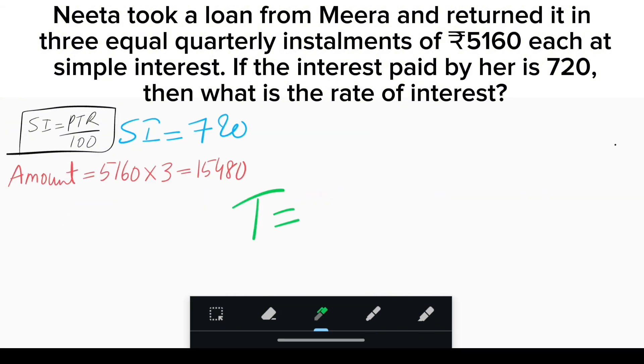Now, the installment is paid on a quarterly basis, so time is 1/4. The initial principal is ₹15,480 - ₹720 = ₹14,760.